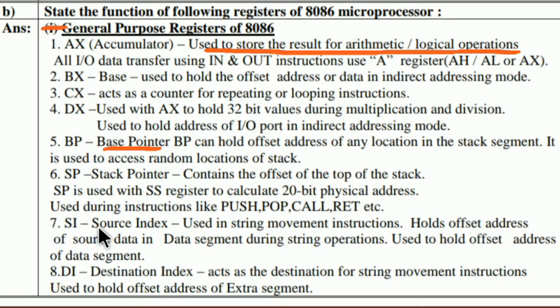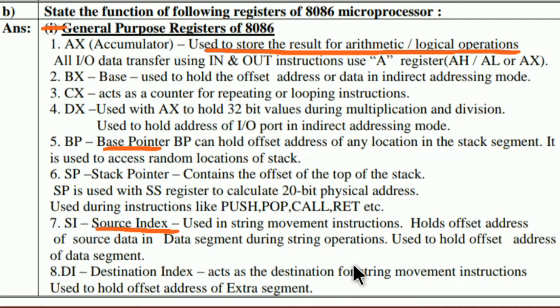The seventh is SI, source index, used in string movement instructions. It holds the offset address of source data in the data segment during string operations, and is also used to hold the offset address of the data segment.